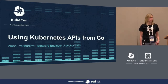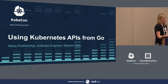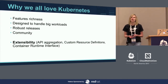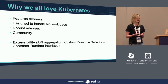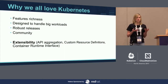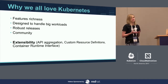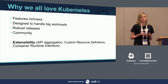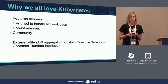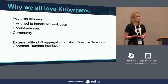This session is going to be about using the Kubernetes API from Go. First, let's talk about why we all love Kubernetes. As a user, you probably appreciate the feature set — there are so many things you can use from Kubernetes for workloads, for node management. If you're a big company, you appreciate Kubernetes' ability to handle big workloads and its performance. And if you're a Kubernetes contributor, you definitely appreciate the community, which is very friendly, very approachable, very helpful.